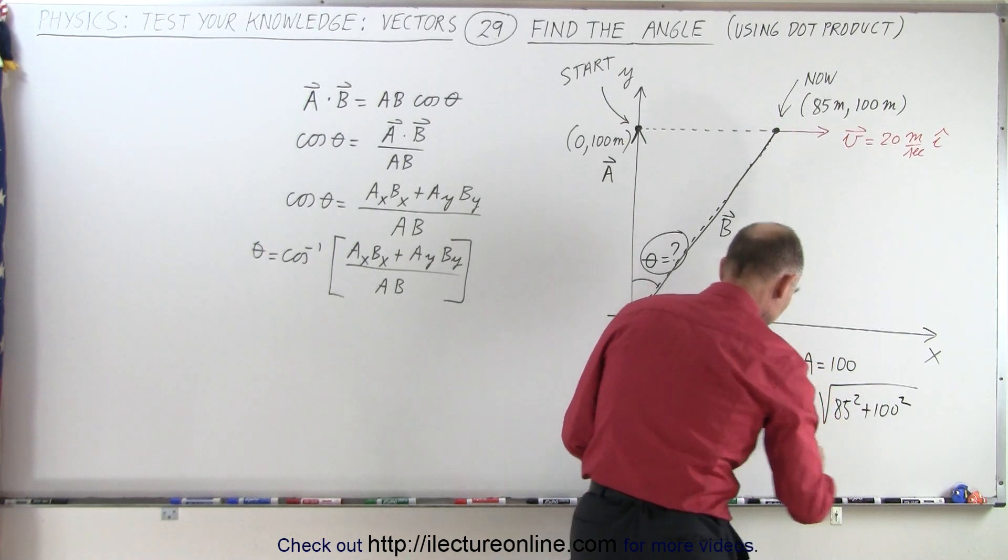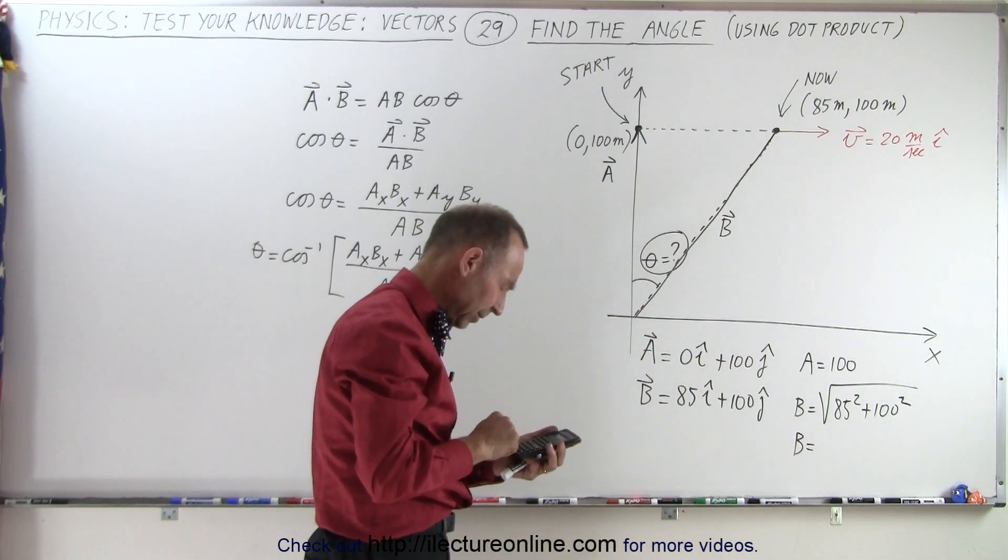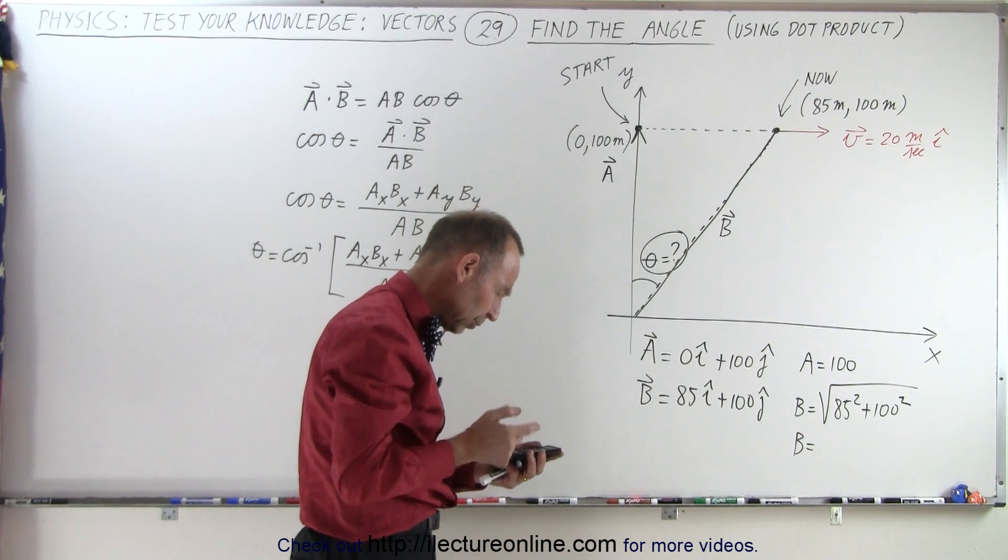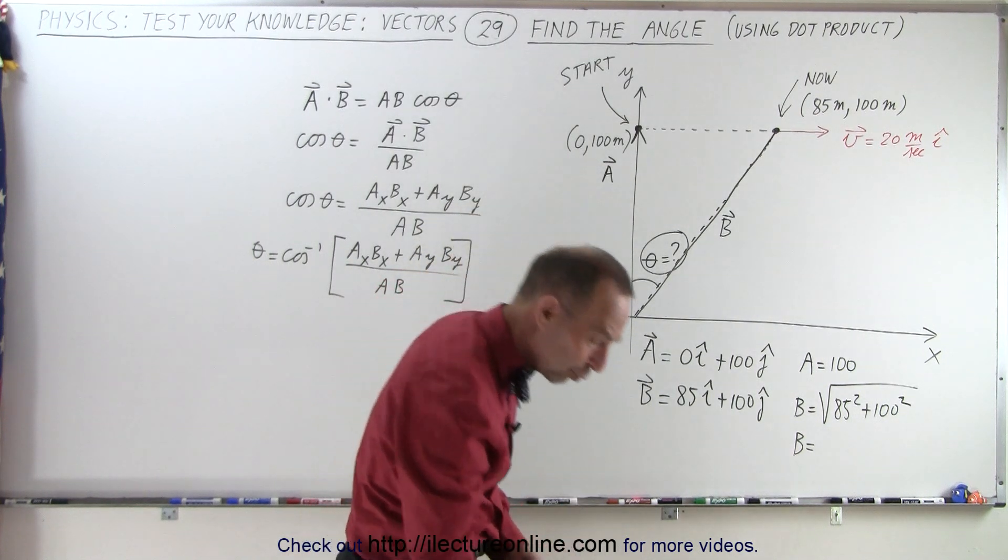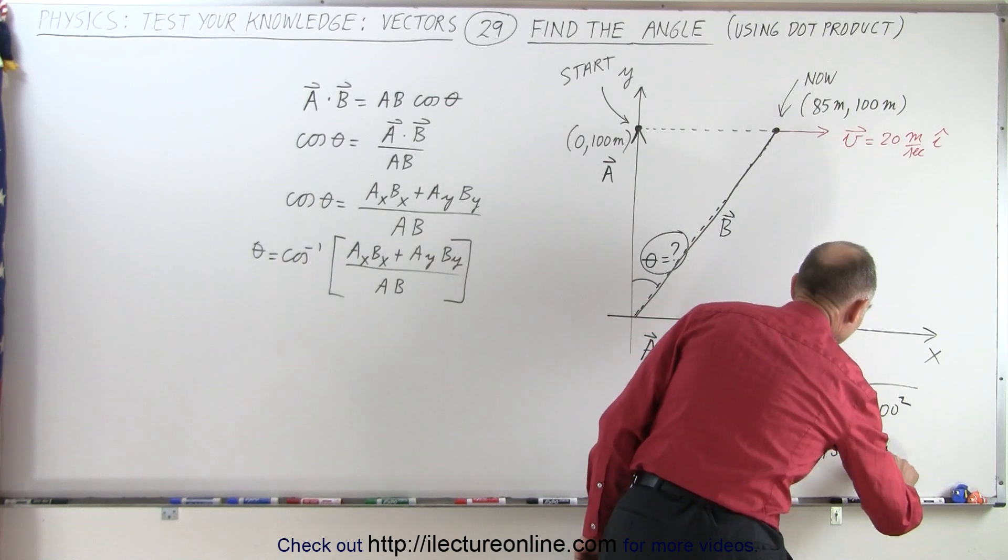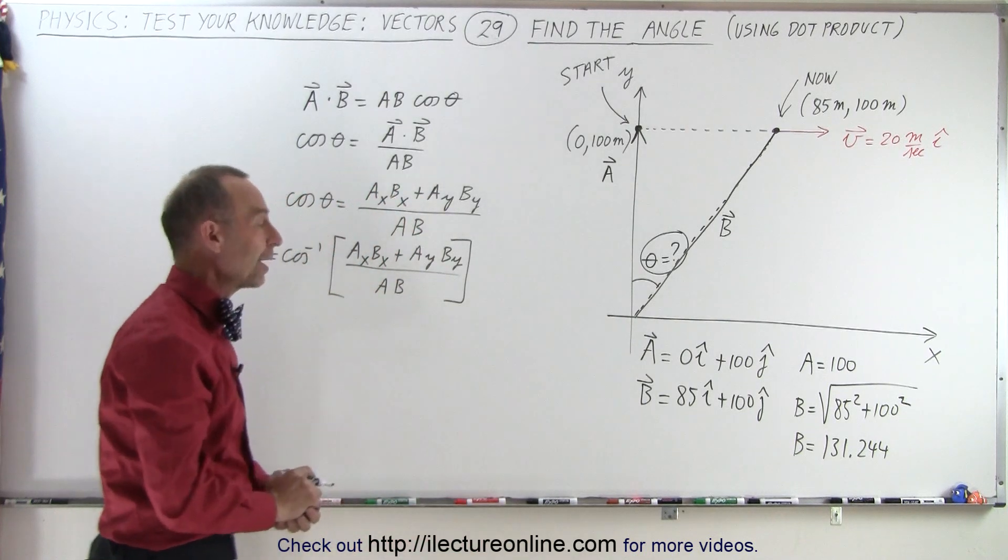So therefore, b is going to be equal to... So we have 10,000 plus 85 squared. Take the square root and it would be 131.244. I'm keeping some extra significant figures just so I don't have a rounding error.